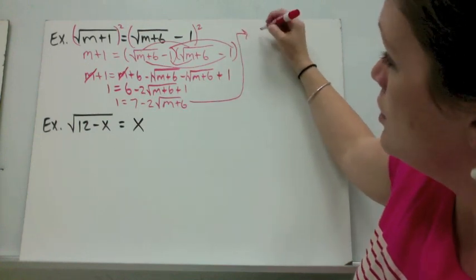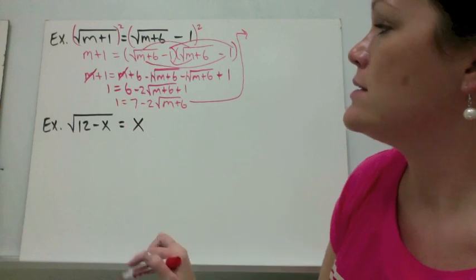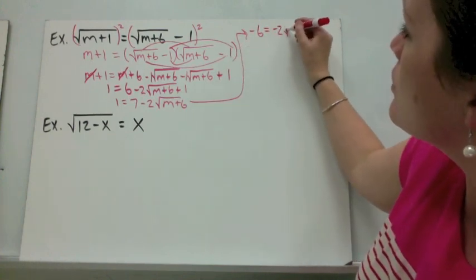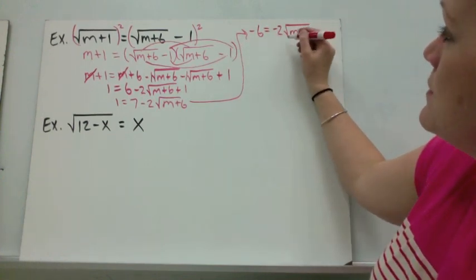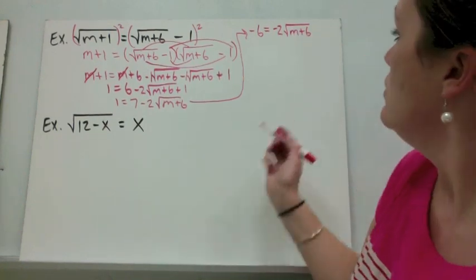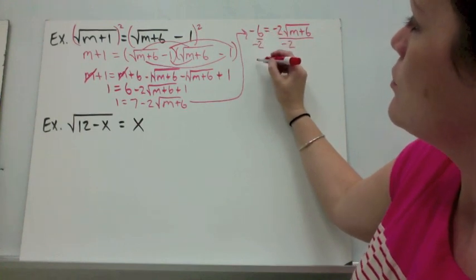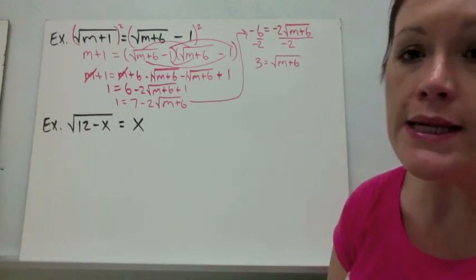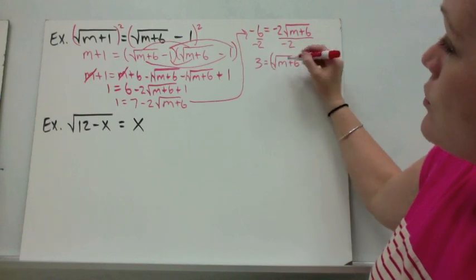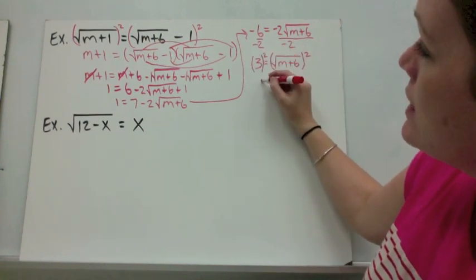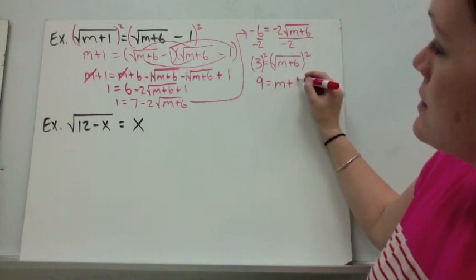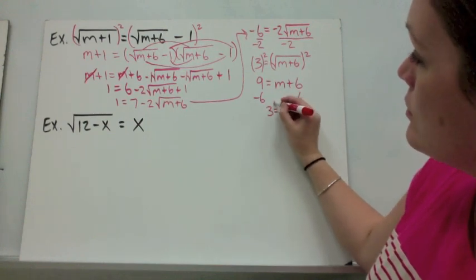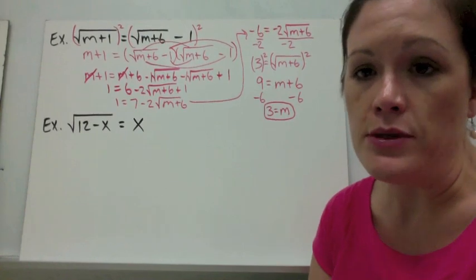Moving to where there's more room: subtract 7 to get negative 6 equals negative 2 times the square root of (m + 6). Dividing by negative 2, we get 3 equals the square root of (m + 6) — now the radical is isolated. Square both sides: 9 equals m + 6. Subtract 6 to get m equals 3. You can plug it back in to confirm, and that's always a good safety check.